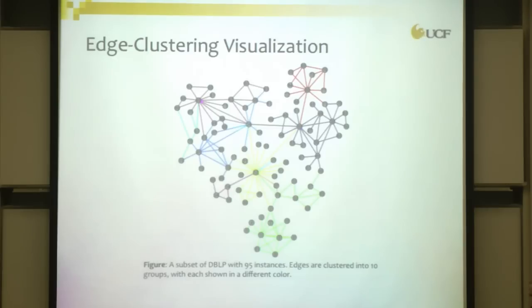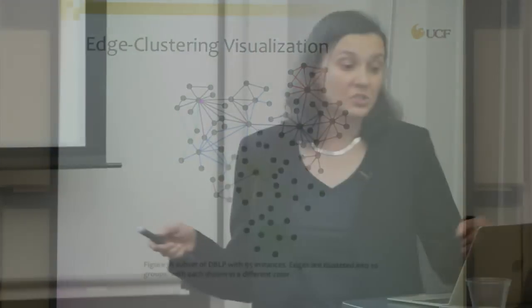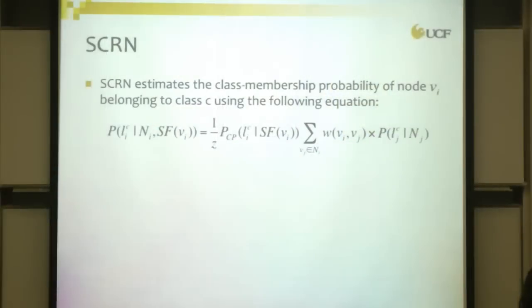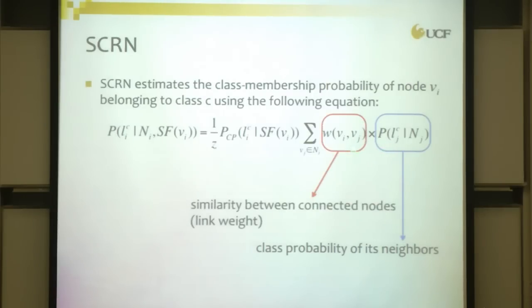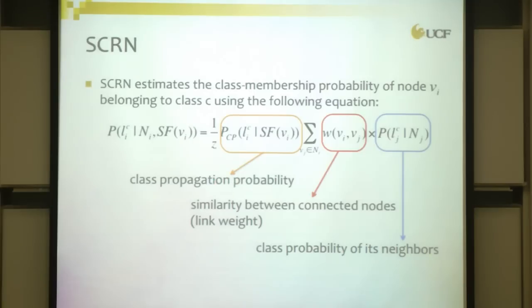We re-represent each node in social feature space based on the edge clustering. For example, node 1 might have three edges in group 1 and three edges in group 2. The propagation is then modified by the edge types a node is connected to. Edge clustering ends up being scalable and fast. The resulting network reveals tight clusters of edges, and nodes in a bridge formation connected to multiple communities, versus nodes that are very tightly connected — and this knowledge improves our labeling of unknown nodes.